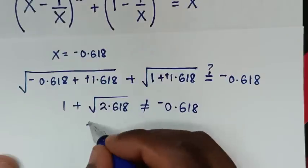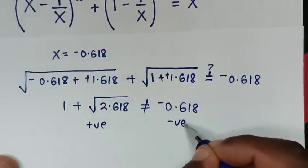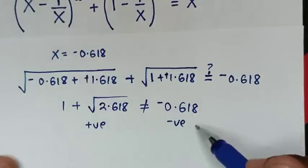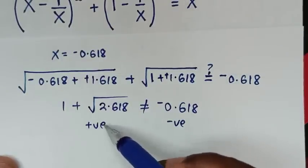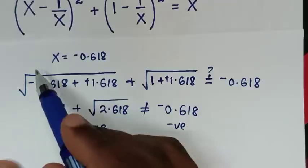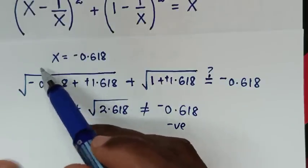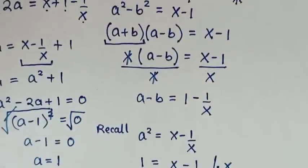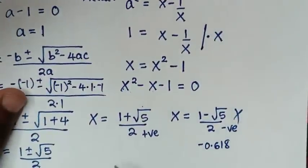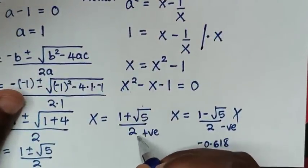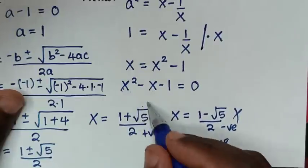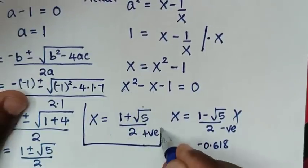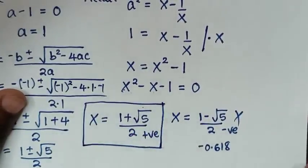The left side is a non-negative number, so the only valid value of x is (1 plus square root of 5) over 2, which is the golden ratio — the only solution to this problem.